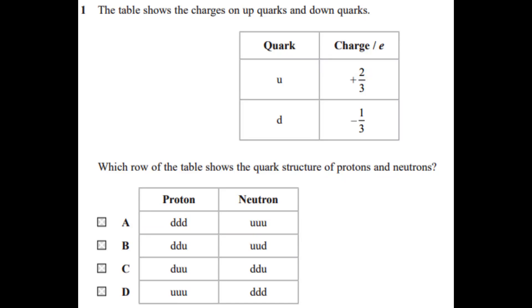So we have a question right here. The table shows the charge on up quark and down quark. Which row of the table shows the quark structure of proton and neutron?